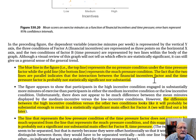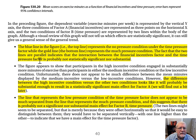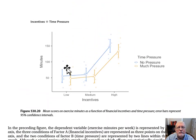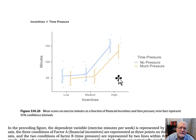What do the results indicate? The blue line — the top line — represents the no pressure condition, while the gold line, the bottom line, represents much time pressure. The fact that the two lines are parallel indicates that the interaction between the financial incentives factor and the time pressure factor is probably not statistically significant nor substantial. When lines are not parallel, it indicates you might have a significant interaction effect. In this case, the lines are parallel, so we probably don't have an interaction effect.